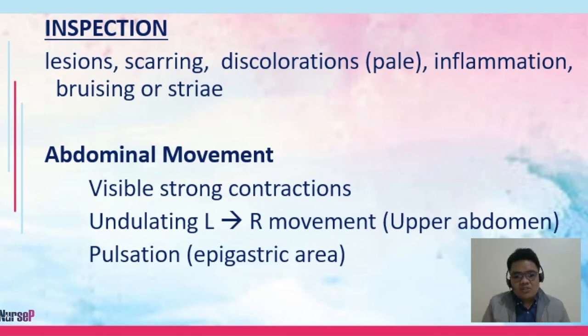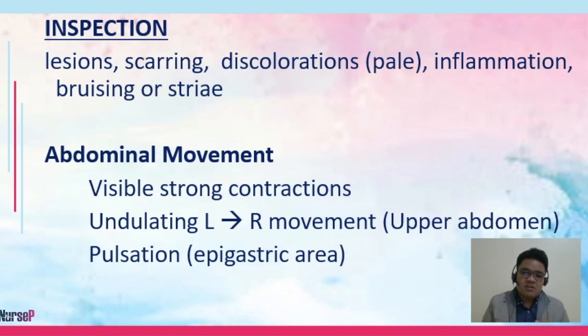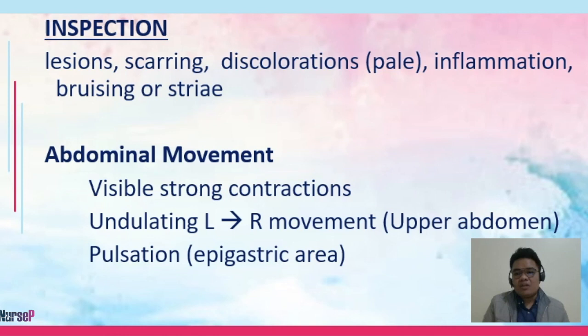Pulsations may be visible in the epigastric area if we're talking about your aorta. However, if this pulsation is very strong, we need to watch out for the possibility of aortic aneurysm.